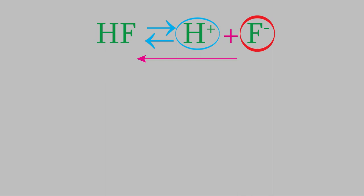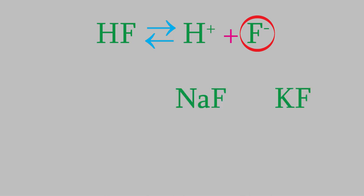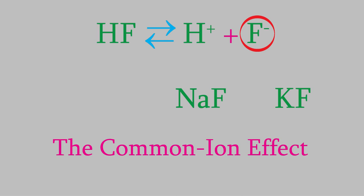That means the solution would become more basic, so the pH would increase. We could add fluoride ions by adding a soluble salt that contains fluoride, like sodium fluoride or potassium fluoride. When the salt dissolves, the sodium or potassium are just spectator ions, but the fluoride becomes part of the reaction. For that reason, Le Chatelier's Principle is also sometimes called the common ion effect, because the reaction shifts when we add a salt that has an ion in common with something in the reaction.